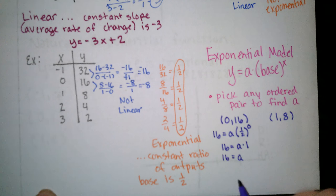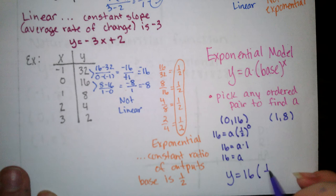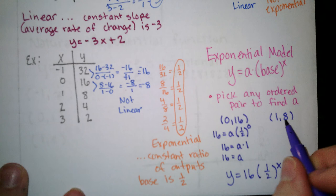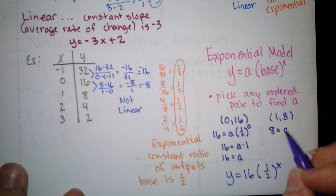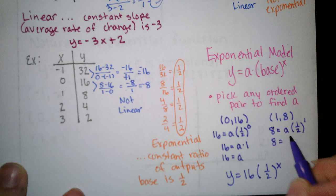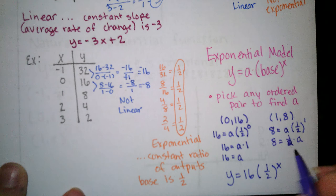Just to verify, let's go ahead and do this other ordered pair as well. So we'd have 8 equals a times 1 half to the first power. So that's 8 equals 1 half times a. Multiply both sides by 2, we get 16 equals a. So it will work for any of the ordered pairs that you choose, but try and pick one that's going to be convenient to work with.